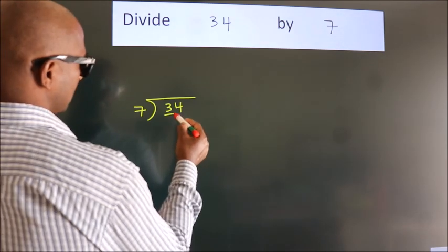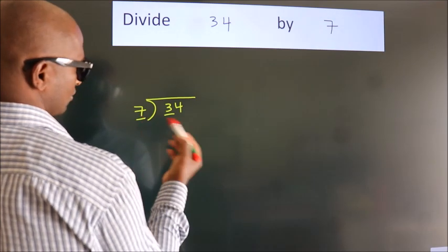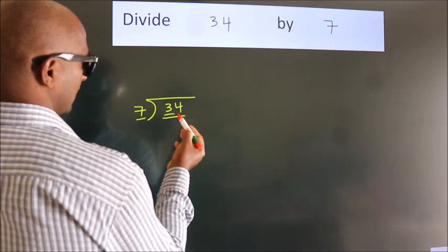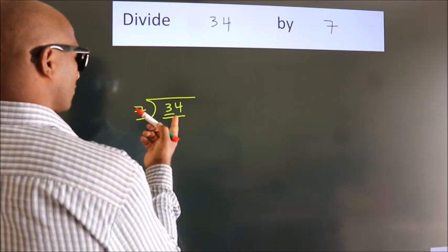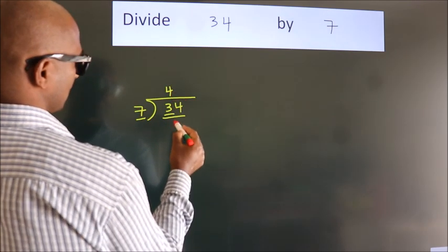here we have 3. Here 7. 3 is smaller than 7, so we should take 2 numbers: 34. A number close to 34 in the 7 table is 7×4=28.